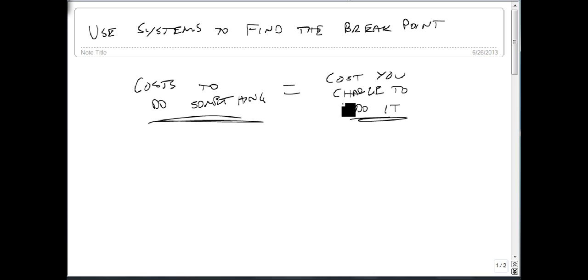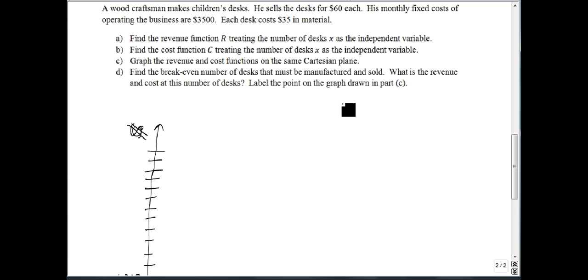So when these two are equal, we say you break even. You don't make any profit, but you don't lose any money. For a particular example, we're going to look at a wood craftsman who makes children's desks. He sells the desks for $60. His monthly fixed costs of operating the business are $3,500, and each desk costs $35 in material.